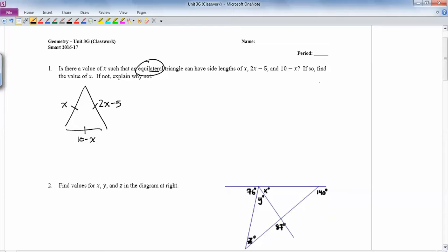If it's equilateral, all the sides have to be the same. So if it's equilateral, then we know that x and 2x minus 5 and 10 minus x should all be equal to each other. Let's pick these two. If I subtract 2x from both sides, I get negative 1x equals negative 5.